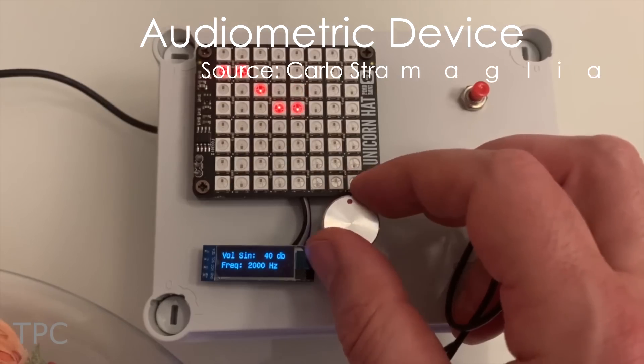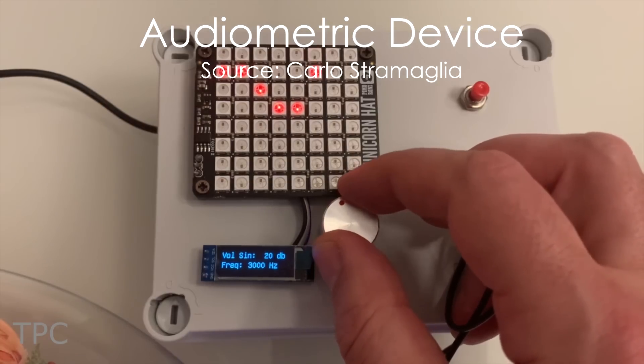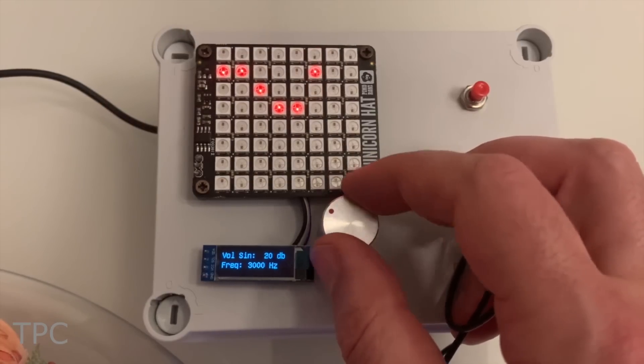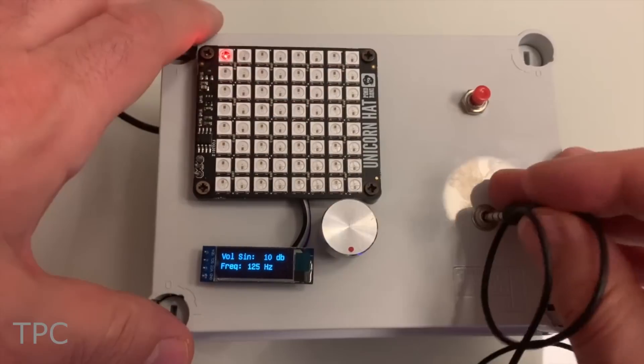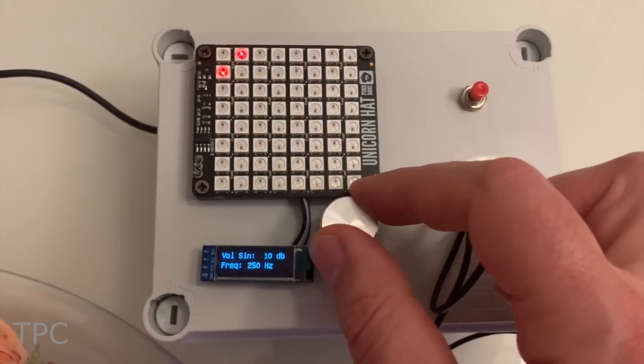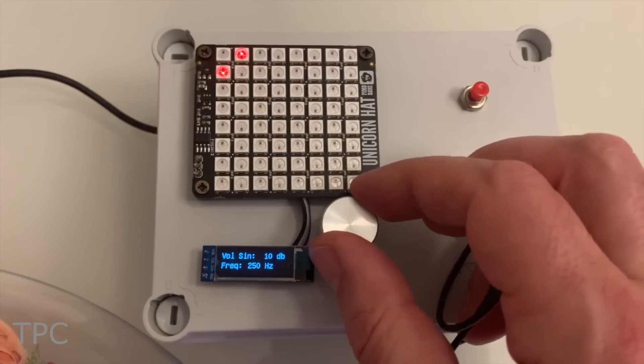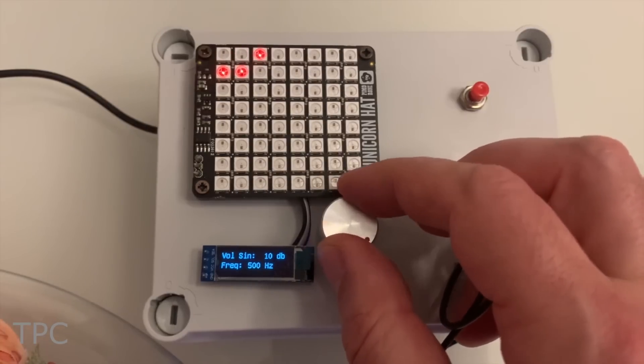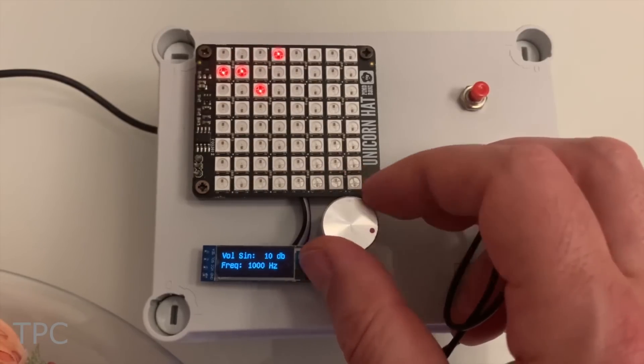This is an Arduino audiometric device. Although it is not a professional device, it can be used for fun purposes. To make it work, you need to plug the headset in your left ear and then start increasing the volume until you hear a sound. When you hear the sound, you need to press the knob that will allow you to check on the next frequency. The display will give you all the info required.